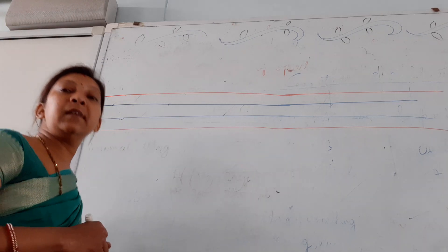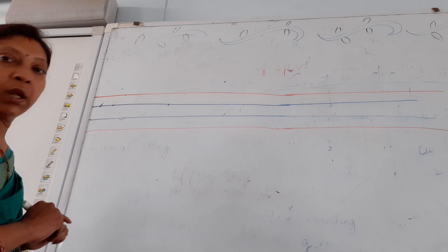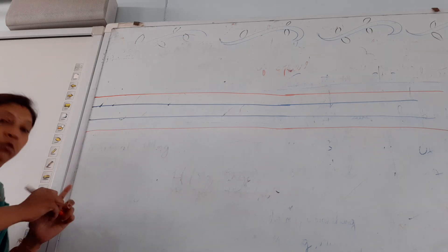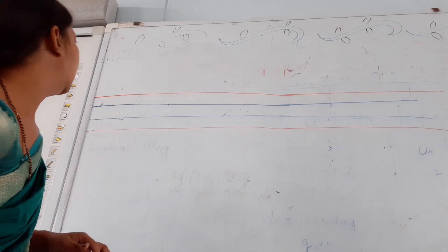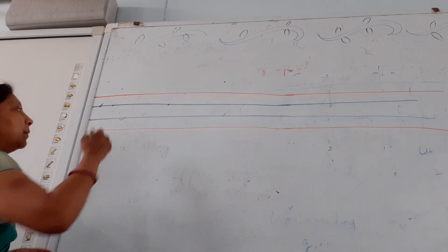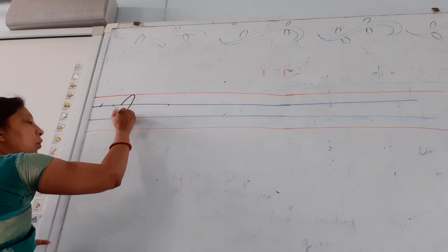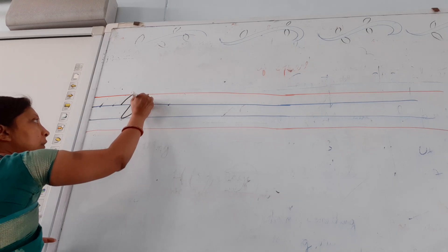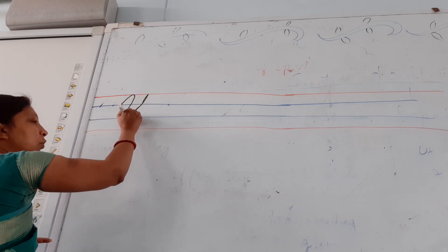Today I am going to teach you cursive Y, which is very easy. You see, focusing right here — we start from the second line, make one sliding line, okay. This is okay, again come over, this is okay.